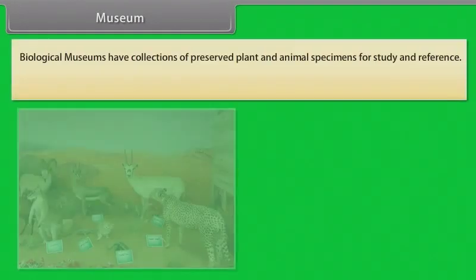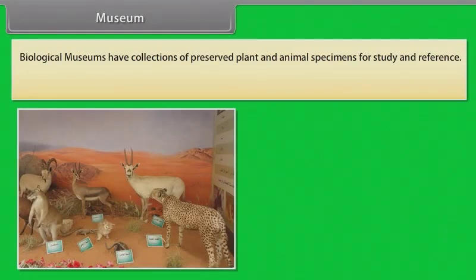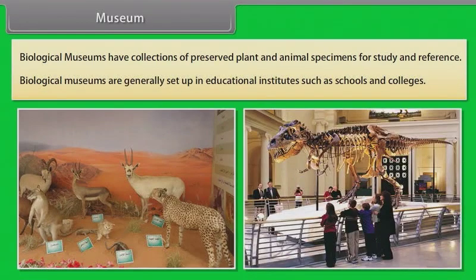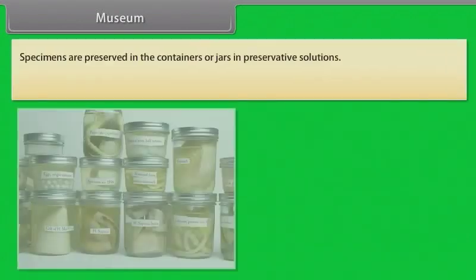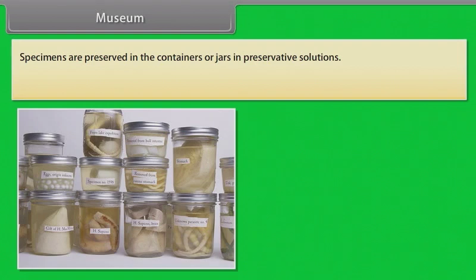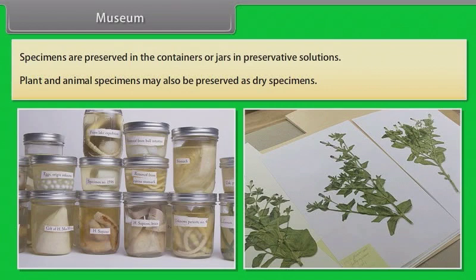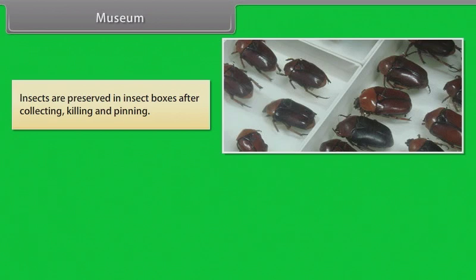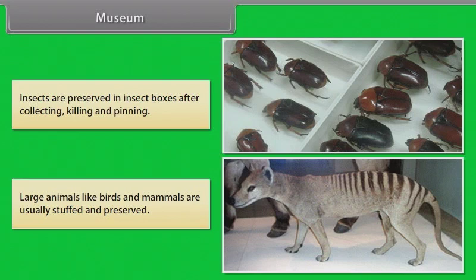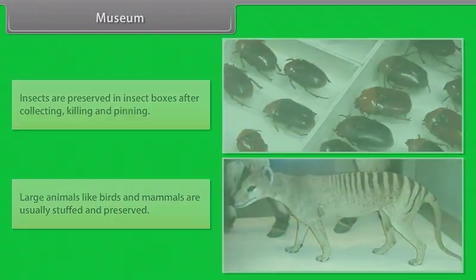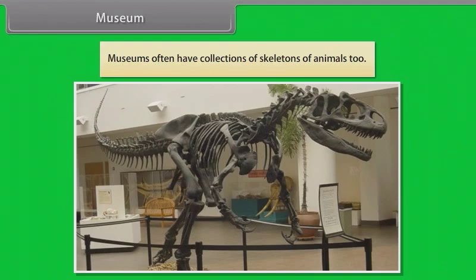Biological museums have collections of preserved plant and animal specimens for study and reference, and are generally set up in educational institutes such as schools and colleges. Specimens are preserved in containers or jars in preservative solutions. Plant and animal specimens may also be preserved as dry specimens. Insects are preserved in insect boxes after collecting, killing and pinning. Large animals like birds and mammals are usually stuffed and preserved. Museums often have collections of skeletons of animals too.